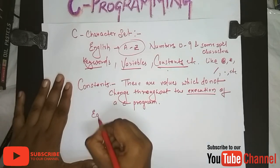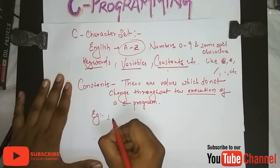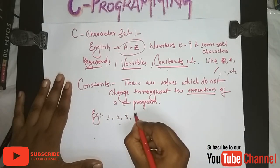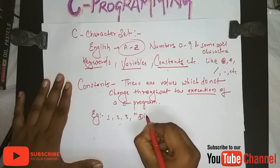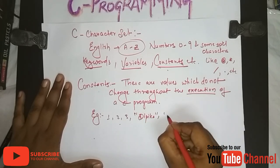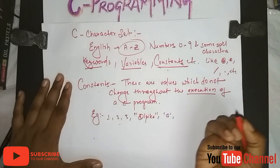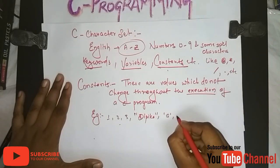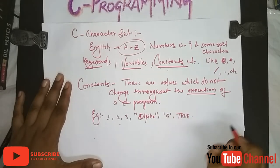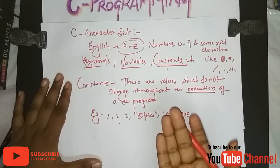For example, any number like 1, 2, 3, or any name like Deepika, or any character like A, or any Boolean value like true or false — these are some constants which we use in C.